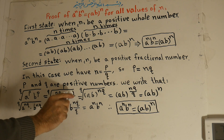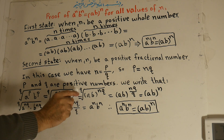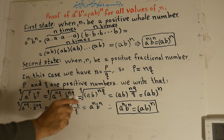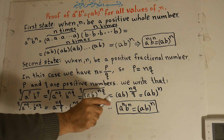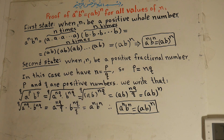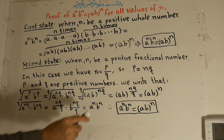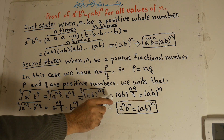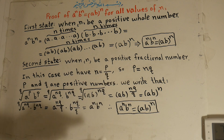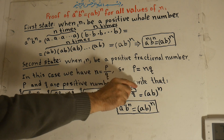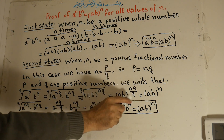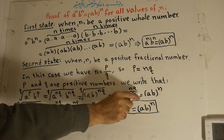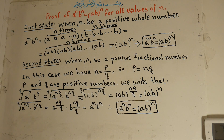We take the q out of the root and bring it to the denominator, so it equals ab to the power of nq over q. The q cancels with the q, giving ab to the power of n.